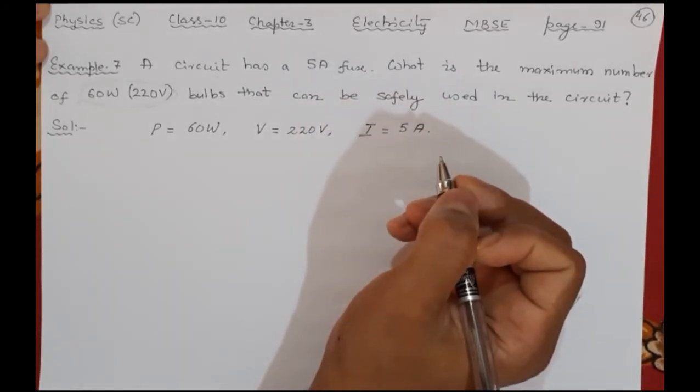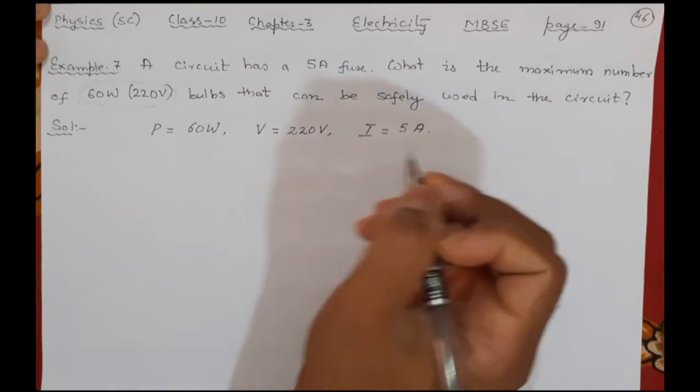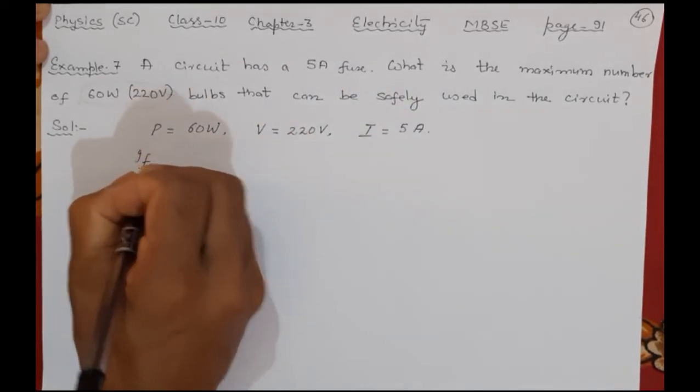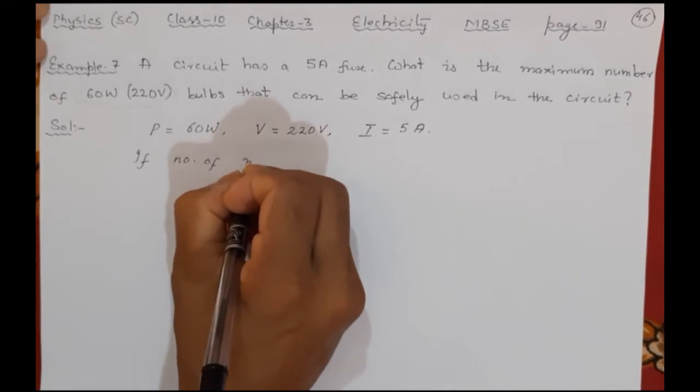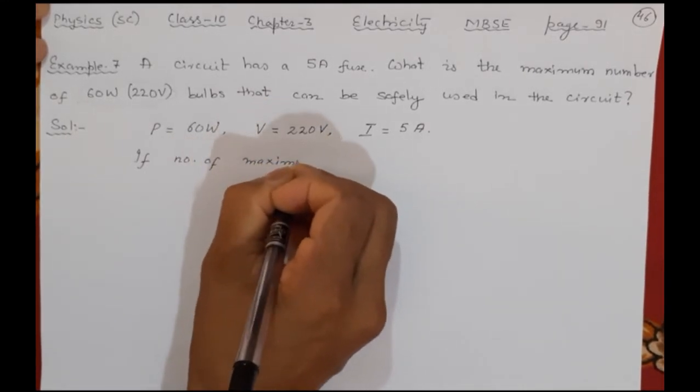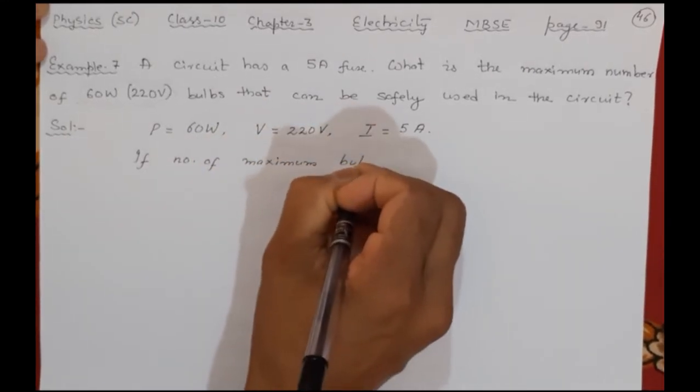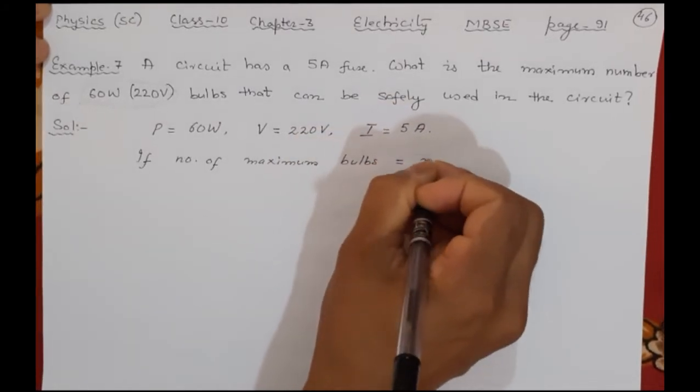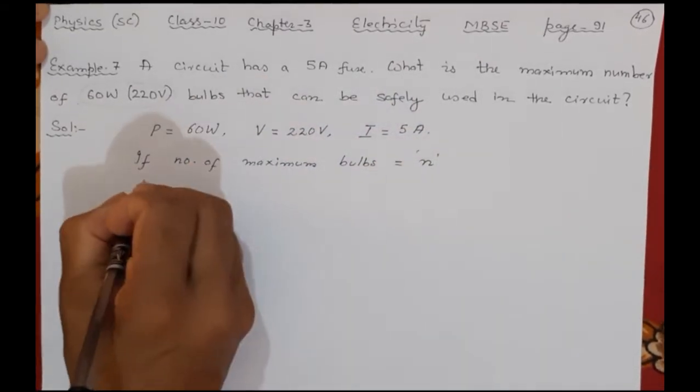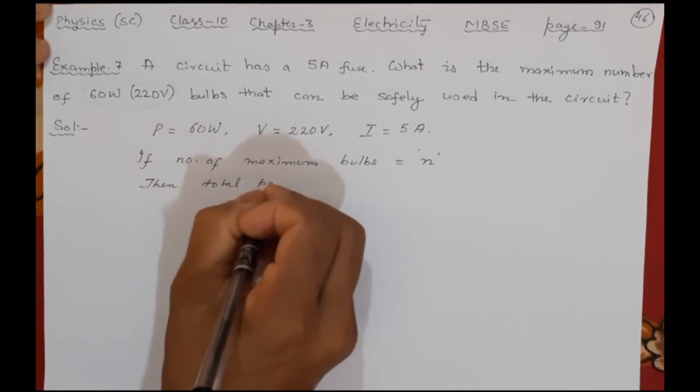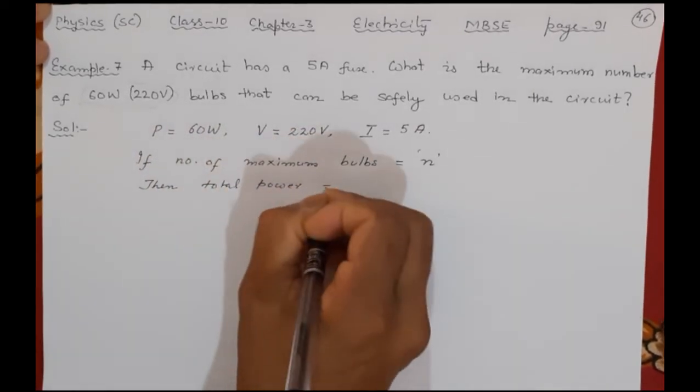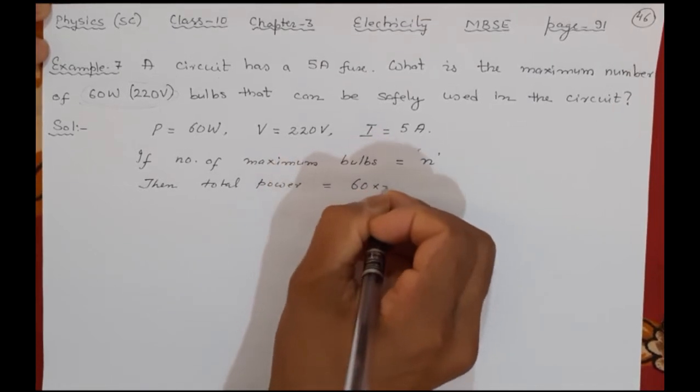Now you know that the power is 60 watt. So if number of maximum bulbs that I can use is suppose it is n, any unknown number n, then total power will be how much? Total power will be 60 into n.